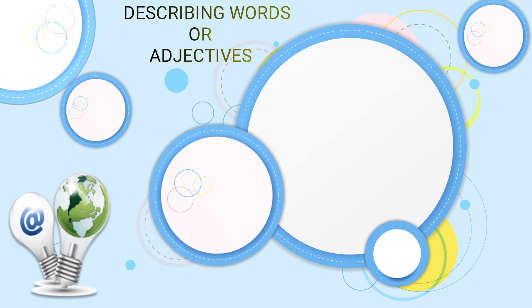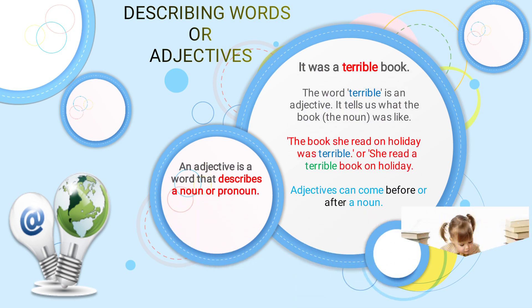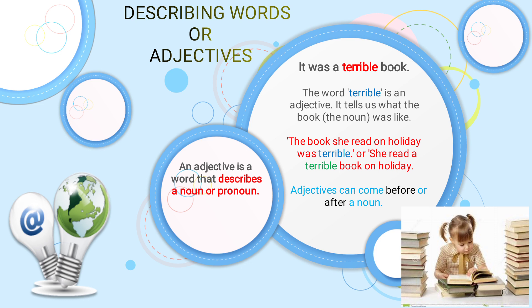First, what is an adjective? An adjective is a word that describes a noun or pronoun. For example, 'It was a terrible book' — here 'book' is a noun, and 'terrible' describes which kind of book it was, so 'terrible' is an adjective. These examples show that an adjective can come before or after a noun.